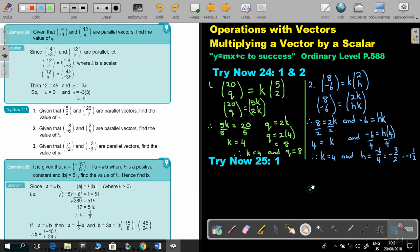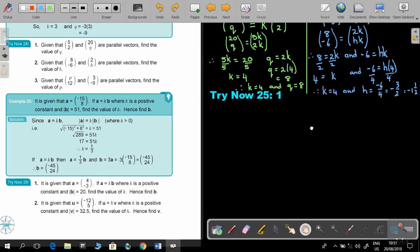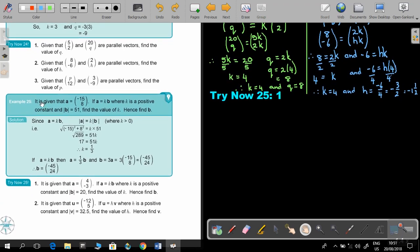Let's look at another example. It's a bit more complicated. So, if it's given that A, they give you the vector A, and I say that A is equal to KB. So, they are parallel, where K is positive constant. But, now I give you the magnitude of B. Find the value of K. So, hence, find B. So, you must first find K, and then find B.